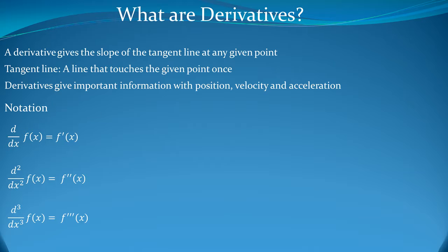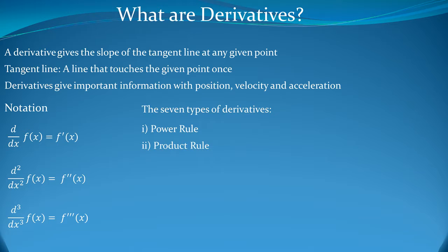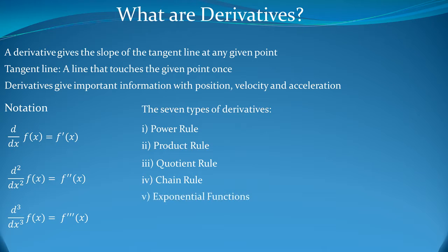Here are the 7 types of derivatives. First is the power rule. Second is the product rule. Third is the quotient rule. Four is the chain rule. Five is exponential functions. Six is trigonometric functions. And seven is inverse trigonometric functions.